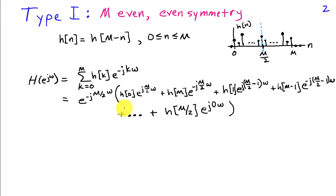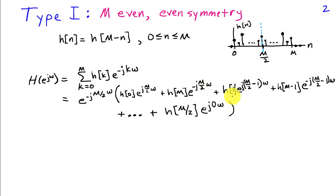We can write out the frequency response and use the symmetry to get a simpler expression. Starting from the sum from k equals 0 to M of H of k times e to the minus jk omega, I factor out e to the minus j capital M over 2 times omega, then group terms with the same coefficient. H of 0 equals H of M by symmetry, giving e to the j M over 2 omega and e to the minus j M over 2 omega. Similarly, H of 1 and H of M minus 1 pair together, and so on. The last term is H of M over 2 multiplied by e to the j 0 omega.